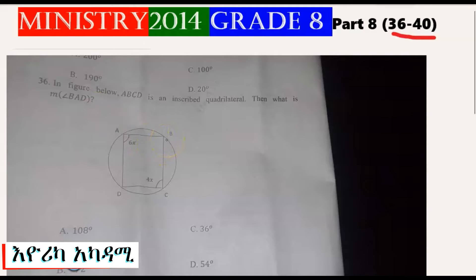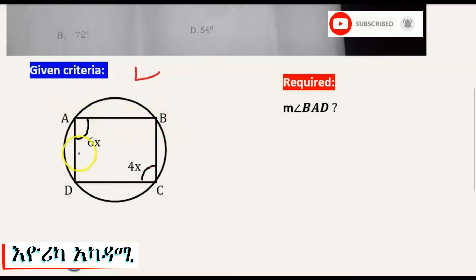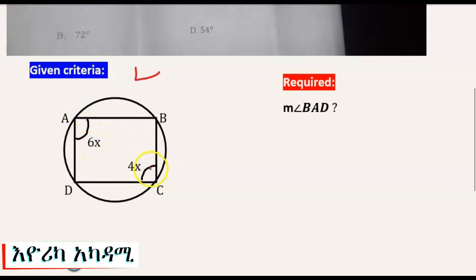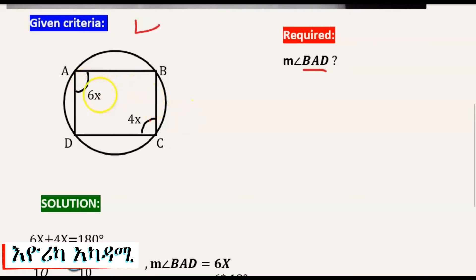We are going to find the measurement of angle BAD. The sum of these two opposite angles is 180 degrees, the same as angle B with angle D.